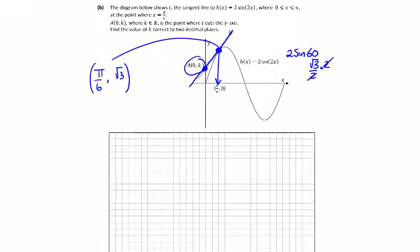So we can get the slope of this line. We can fill those values into the slope, so the slope is h'(x). h'(x), 2 sine 2x goes to 2 cos 2x. Then we just differentiate the angle, 2x goes to 2.